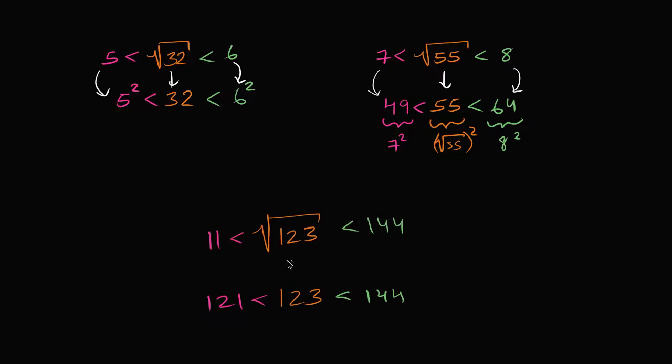So once again, what's the square root of 123? It's going to be 11 point something. And in fact, it's going to be closer to 11 than it's going to be to 12. 123 is a lot closer to 121 than it is to 144.